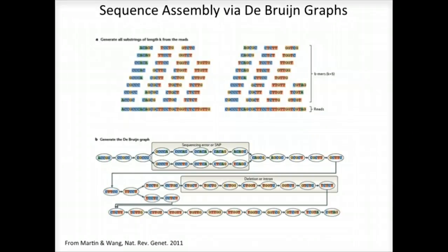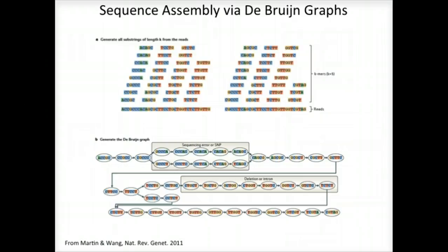At positions where related sequences diverge due to allelic polymorphisms, splicing variations, repeats, or due to sequencing errors, the graph will branch and can form bulges or loops.